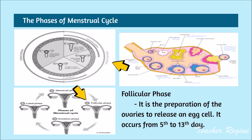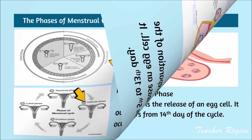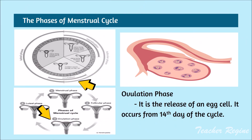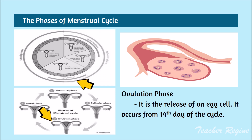Follicular phase: it is the preparation of the ovaries to release an egg cell. It occurs from the 5th to the 13th day. Ovulation phase: it is the release of an egg cell. It occurs on the 14th day of the cycle.